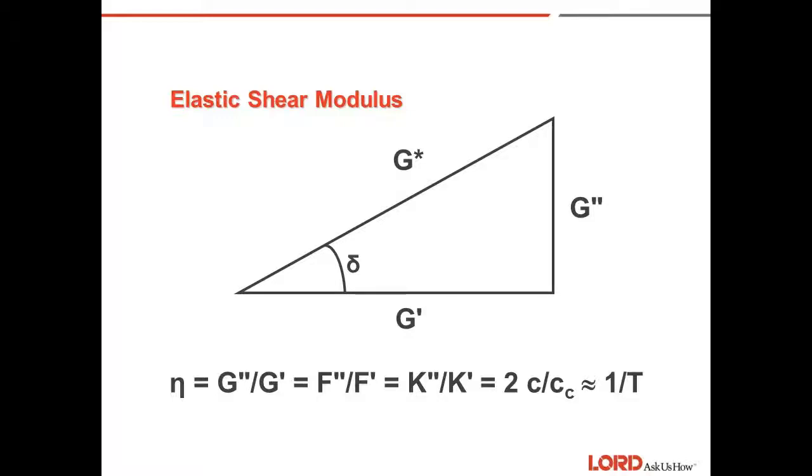Dynamic shear modulus, G star, can be described as a complex number with an elastic shear modulus, G prime component, and a damping shear modulus, G double prime component, and a phase angle, delta. The ratio of damping modulus to elastic modulus, or tan delta, is also called the loss factor. The transmissibility of a rubber spring at resonance is approximately equal to the inverse of the loss factor.